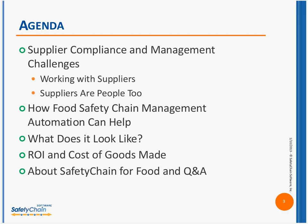We're looking at about 45 minutes today. We're going to start with a brief overview of some of the challenges in supplier compliance and management that you're experiencing when working with suppliers. We also understand that suppliers are people too, and we'll look at some of the advantages from the supplier point of view as well. We'll then look at how food safety chain automation can help with those challenges. Dave will show you a high-level look at what safety chain management solutions look like. We'll talk about return on investment, how to lower cost of goods made, and we'll end with a brief look at Safety Chain and take all of your questions.